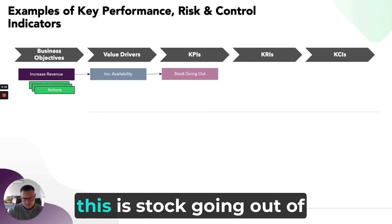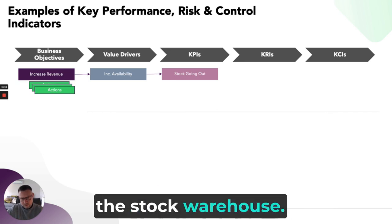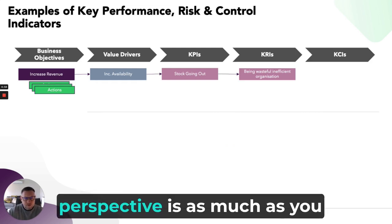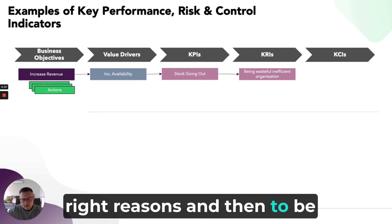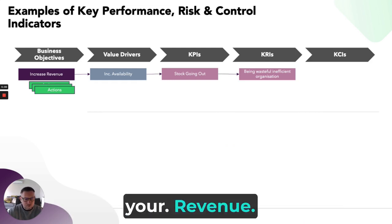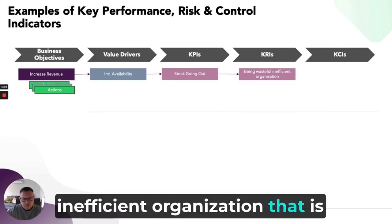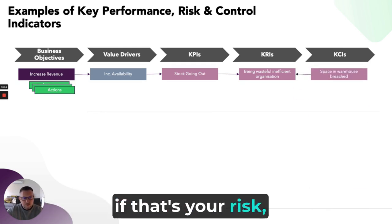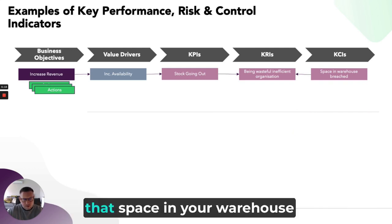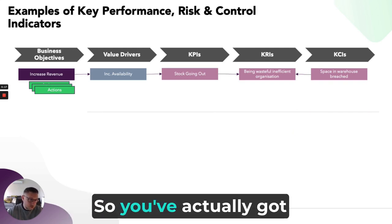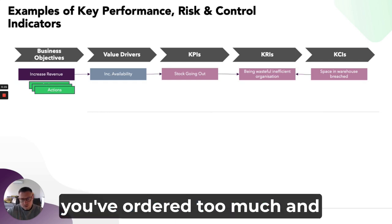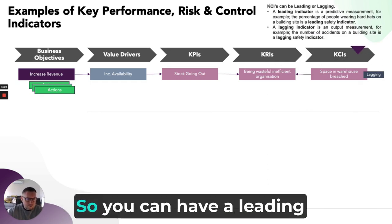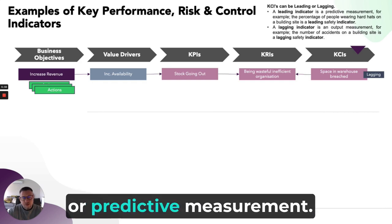One of the Key Performance Indicators you might look at is stock going out of the warehouse — if it's going out, it's presumably being sold. On the inverse, from a risk perspective, you want stock going out for the right reasons and to be monetised, not to be a wasteful and inefficient organisation that works against your objective. Some of the Key Control Indicators you might look at include whether space in your warehouse has been breached — you've ordered too much and are over capacity. That's a lagging indicator.